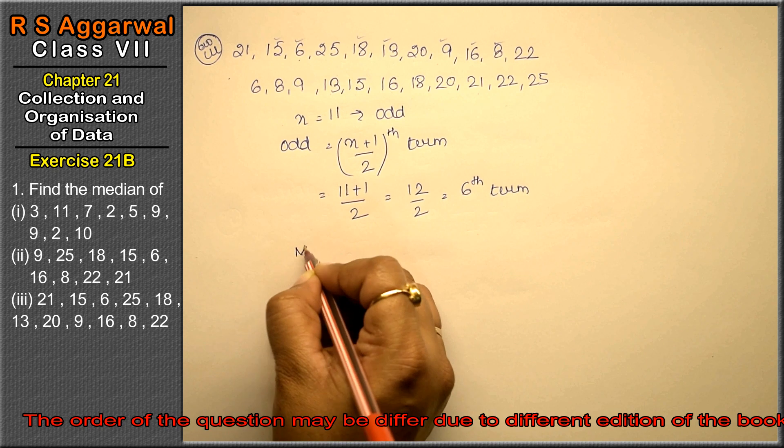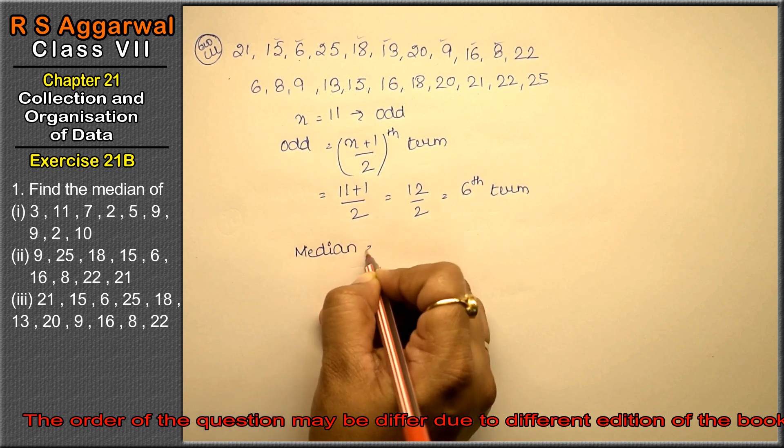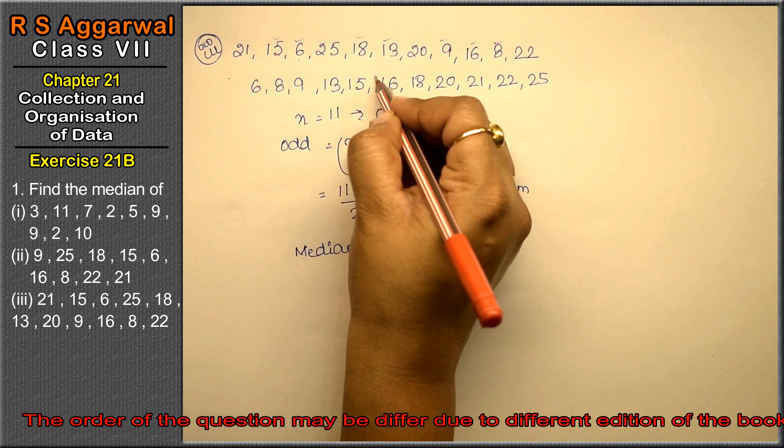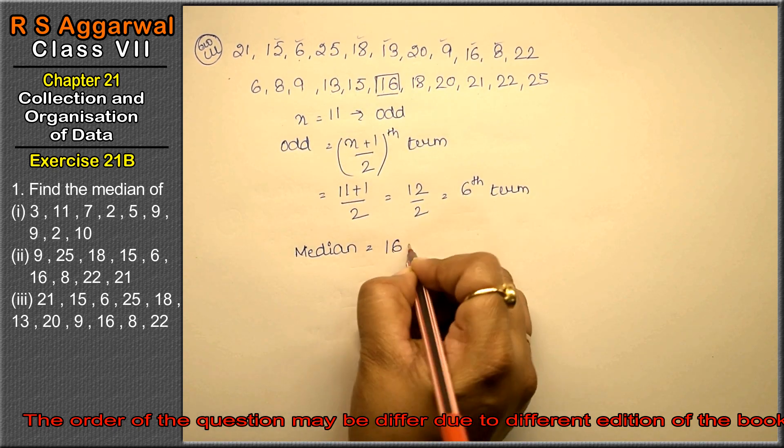So median is: 1, 2, 3, 4, 5, 6, that means 16 is the answer.